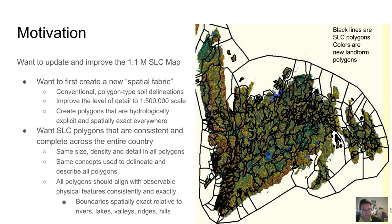Our motivation for this work was to investigate options for updating and improving the SLC map. We decided to first try to create a new and consistent stable fabric to act as proto-polygons for a new SLC at 1 to 500,000 scale. We wanted particularly to aim to create polygons that were aligned exactly with observable physical features, particularly hydrology.